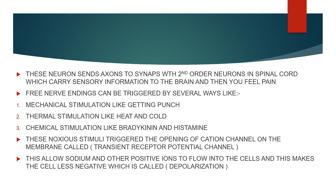Free nerve endings can be triggered in several ways: by mechanical stimulation, like getting punched; by thermal stimulation, like heat and cold; or by chemical stimulation from molecules like bradykinin and histamine.